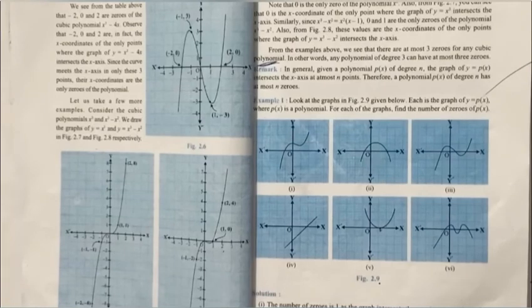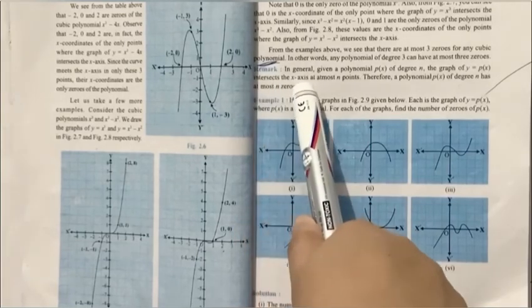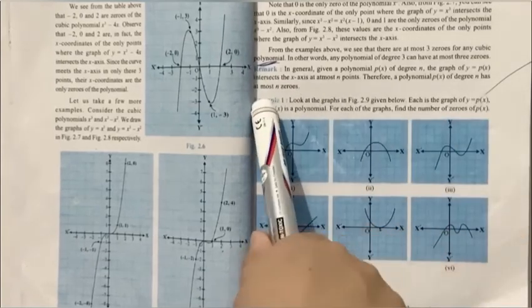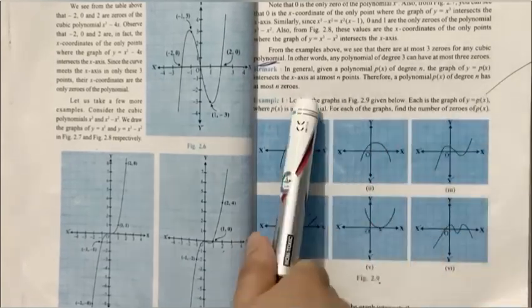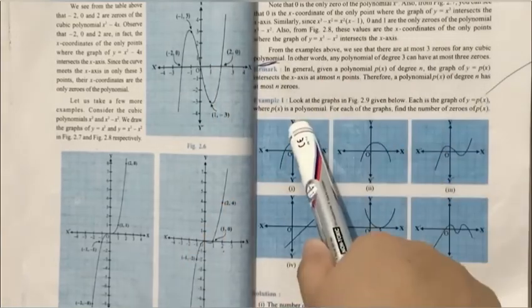This is page number 27 of NCERT. Here we have a very important remark: the graph of a polynomial of degree n intersects the x-axis at at most n points. Therefore, a polynomial of degree n has at most n zeros. At however many points the graph intersects, at most that many zeros the polynomial can have.